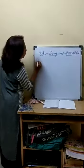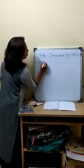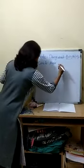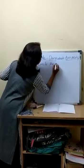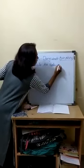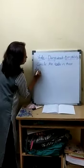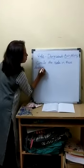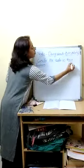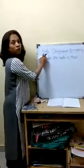Our title in the notebook should be: Circle the verbs in these sentences. First I will write all the sentences, then all together we will circle the verbs.